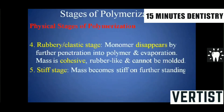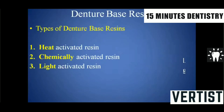The fourth is the rubbery or elastic stage, where the monomer disappears by further penetration into the polymer and evaporation. The mass is cohesive and rubber-like but cannot be molded, making it unsuitable for packing. The fifth is the stiff stage, where the mass becomes more stiff — again a stage where manipulation is not possible.